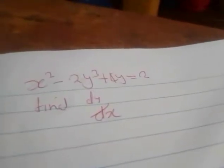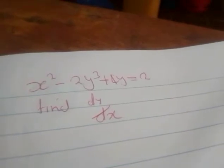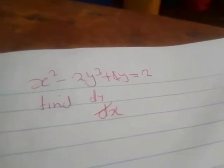x squared minus 2y cubed plus 4y equals 2. Find dy over dx. So for this one will be 2x minus, for this one as you can see.